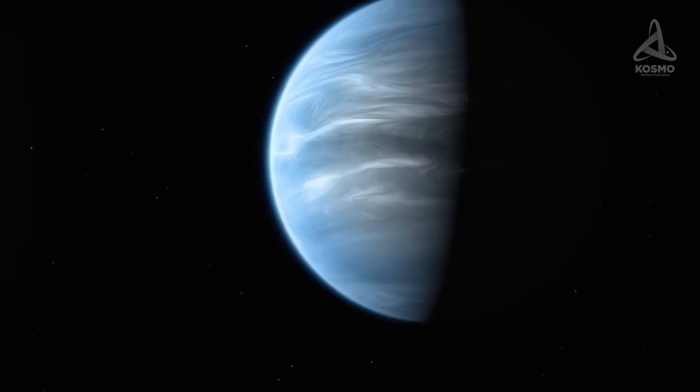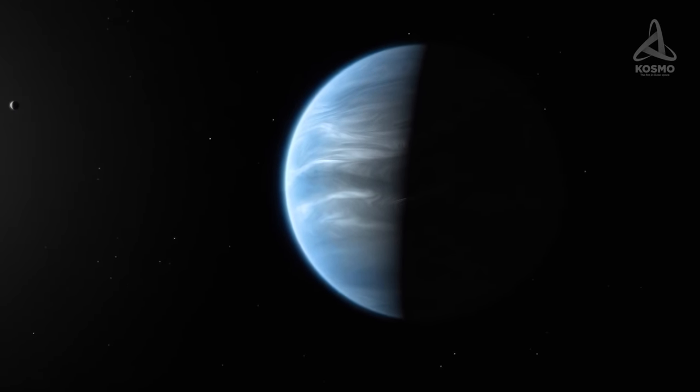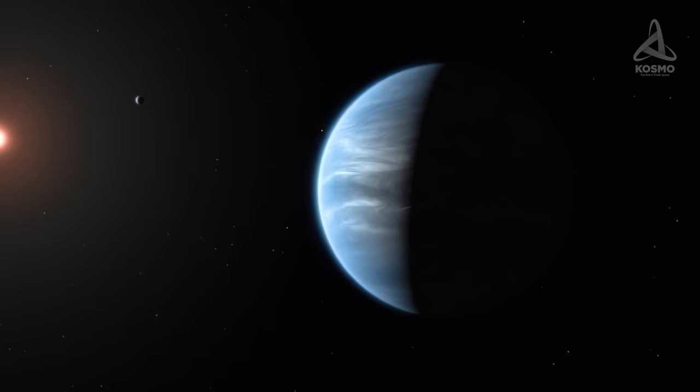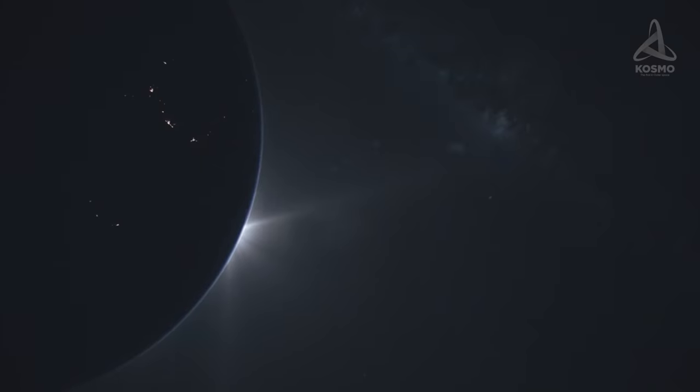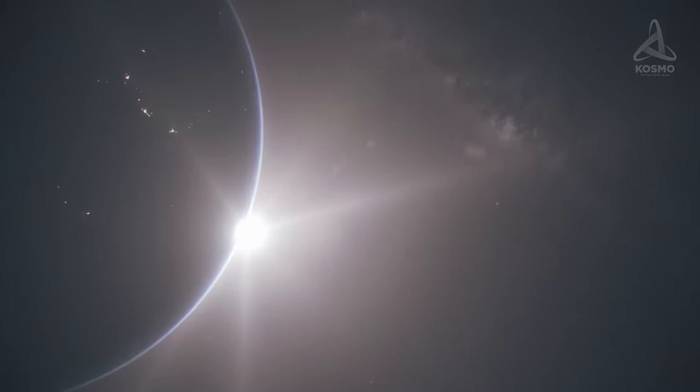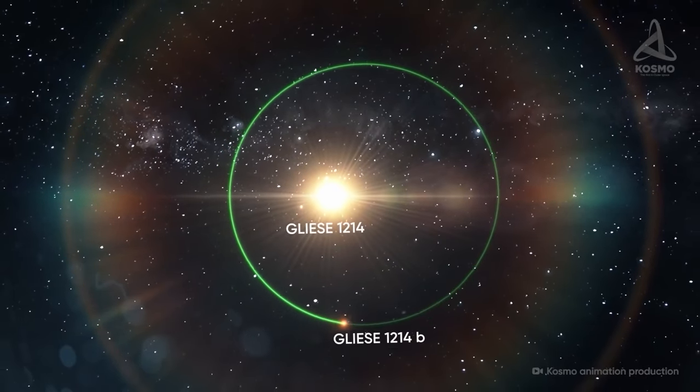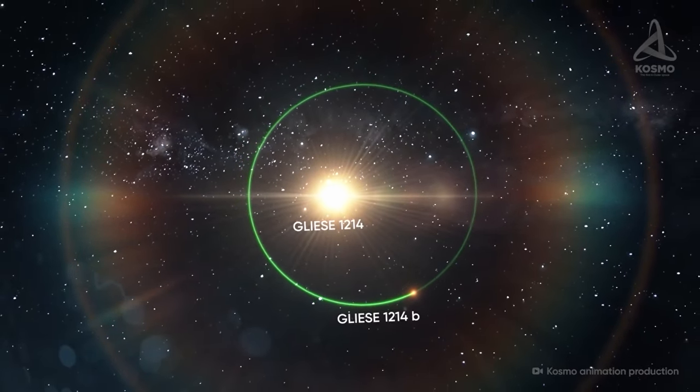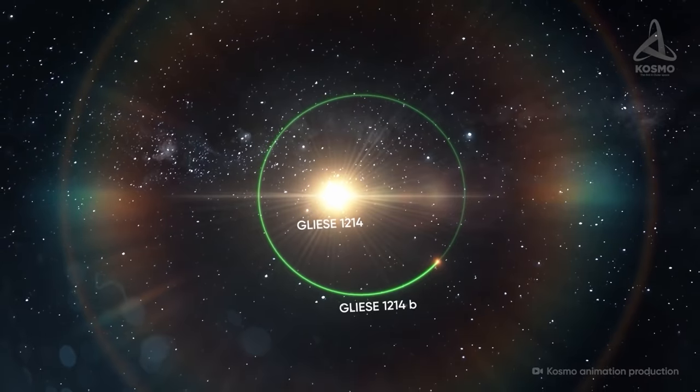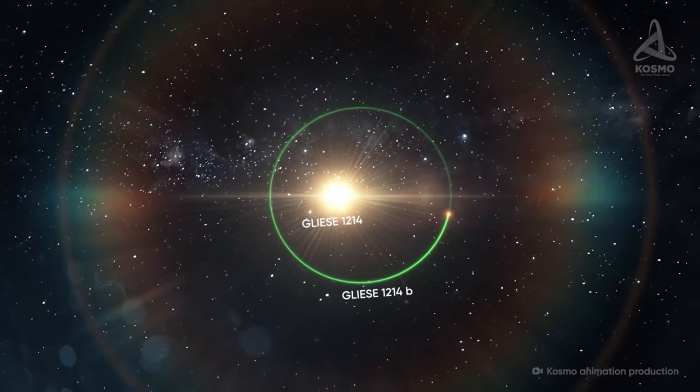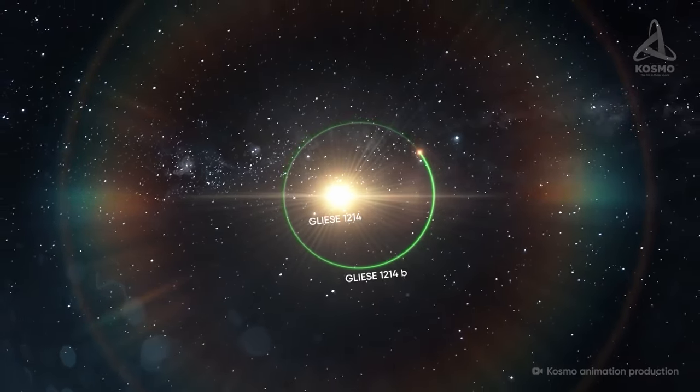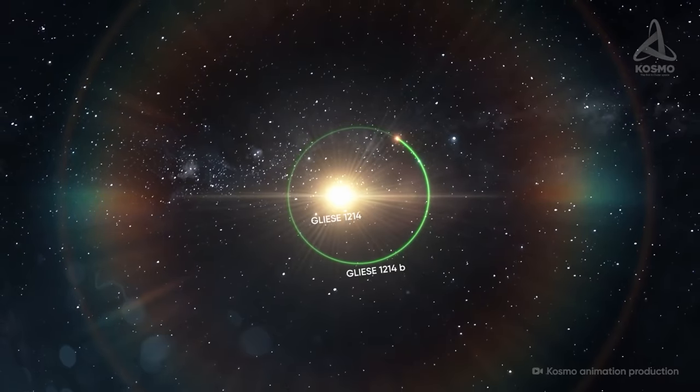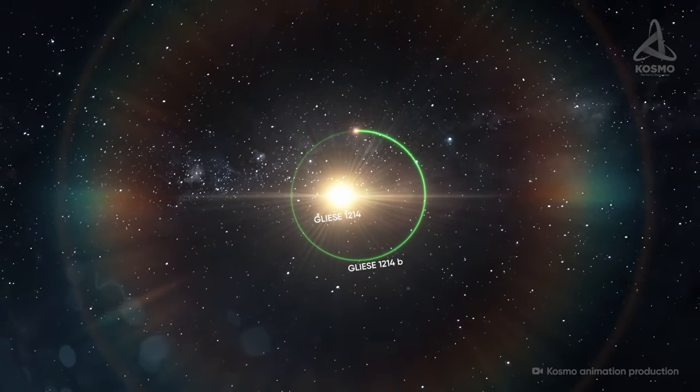The object lies very close to its host star. The average distance between them measures just around 2 million kilometers, or 0.014 astronomical units, which is 75 times smaller than that between the Earth and the Sun. Also, the orbit eccentricity is rather high, at 0.27, slightly more than that of Pluto. This means that in its perihelion, Gliese 1214 b is approximately twice as close to its star than when in its aphelion. As for its orbital period, it takes the planet about 36 hours to complete it.